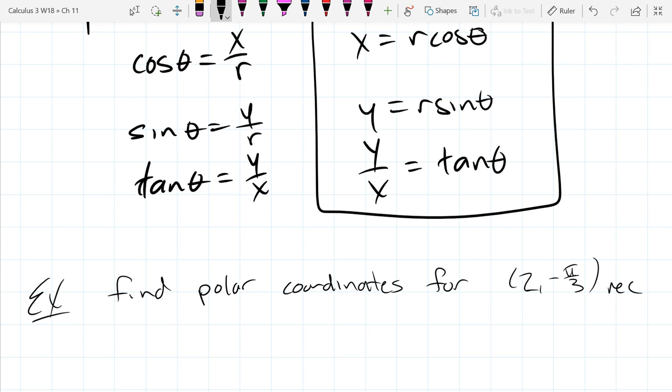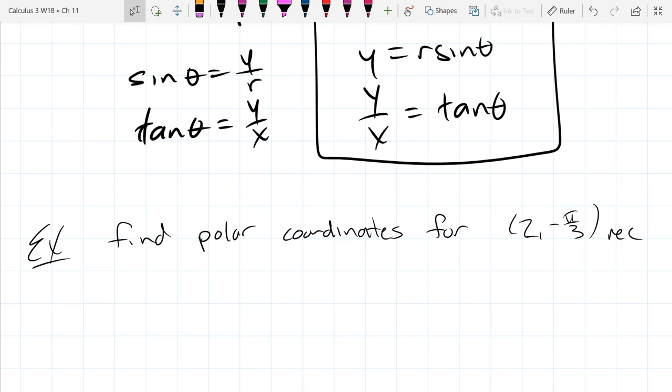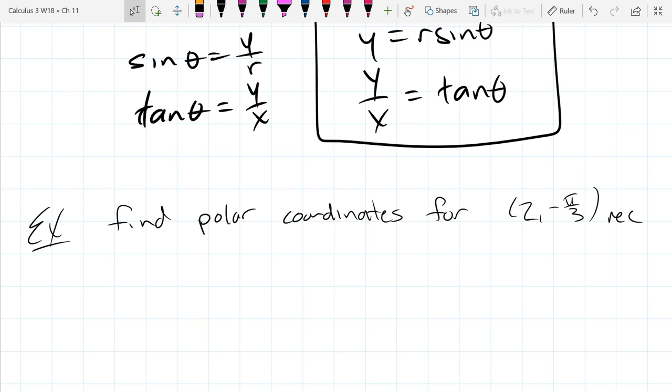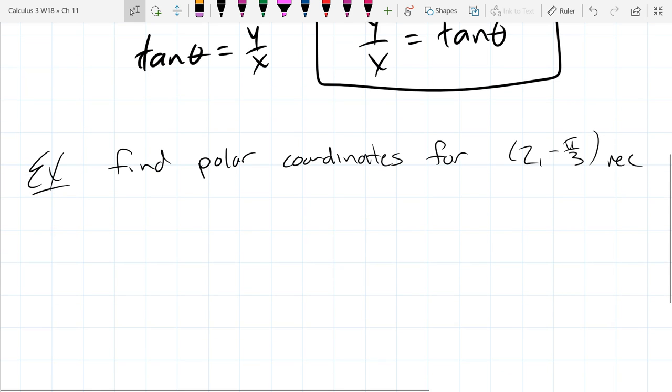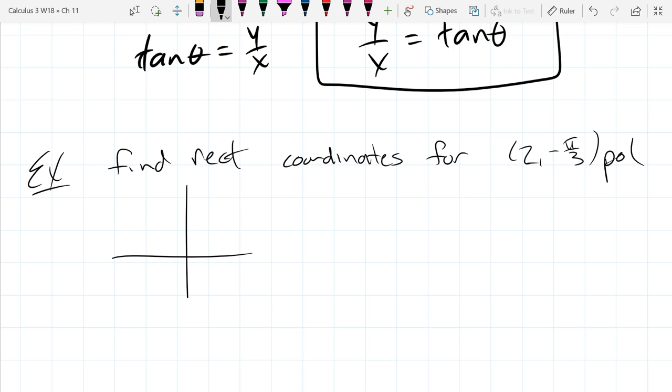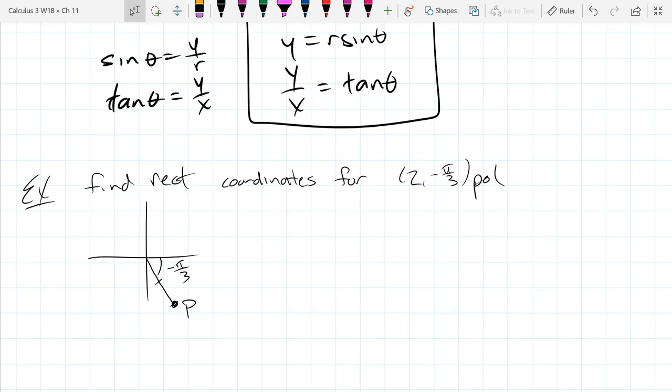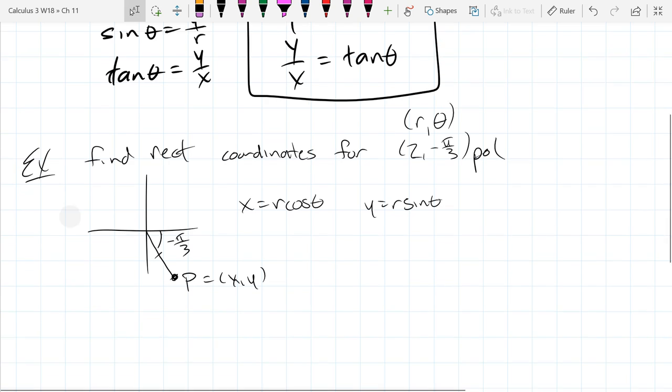So this is in rectangular. We have negative pi over 3. That is an easy angle. There's the point P. We're going to get x and y coordinates for this point P. Remember polar coordinates have an order: radius first, theta second. It's alphabetic order, r before theta.